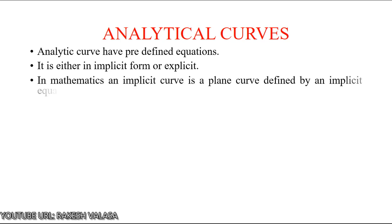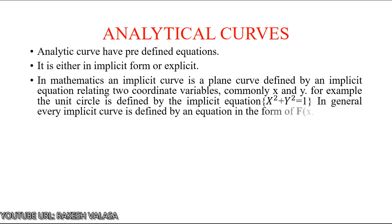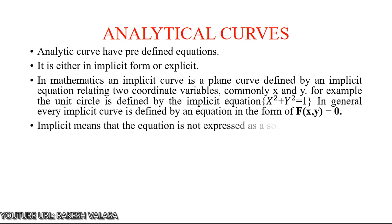In mathematics, an implicit curve is a plane curve defined by an implicit equation with two coordinate variables like x and y. For example, the unit circle is defined by the implicit equation x squared plus y squared equal to 1. In general, every implicit curve is defined by an equation in the form of f(x, y) = 0. In the implicit equation, we represent the form as f(x, y) = 0. Implicit means the equation is not expressed as a solution for either x in terms of y or vice versa.